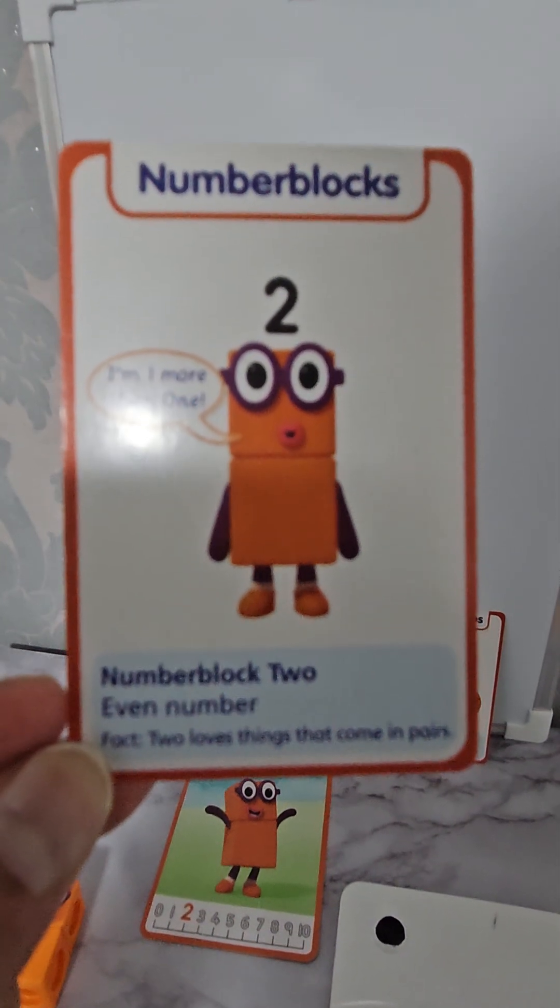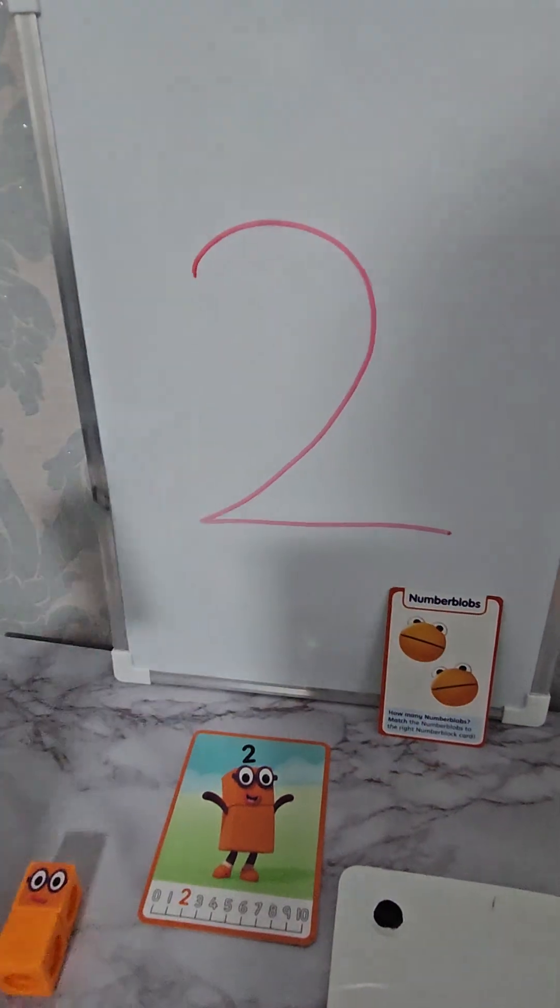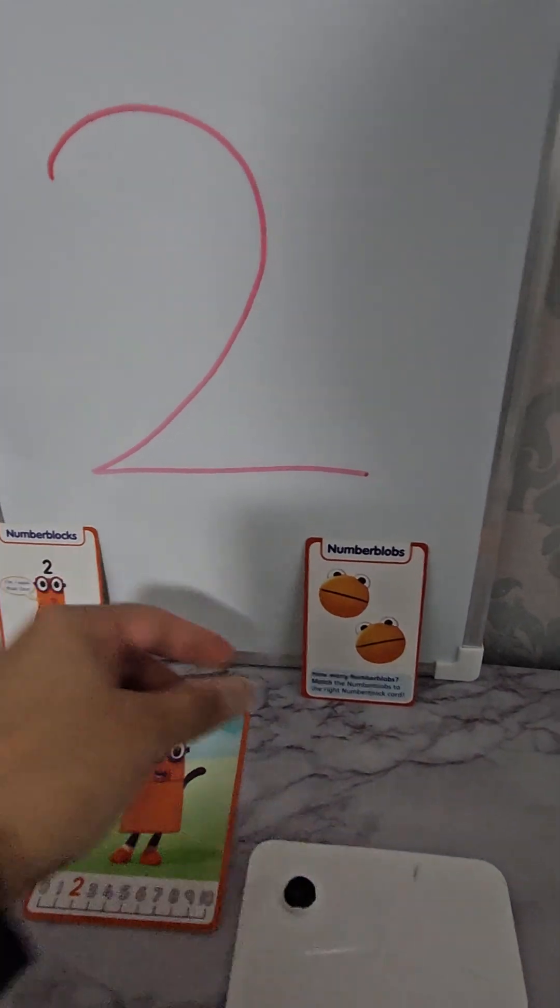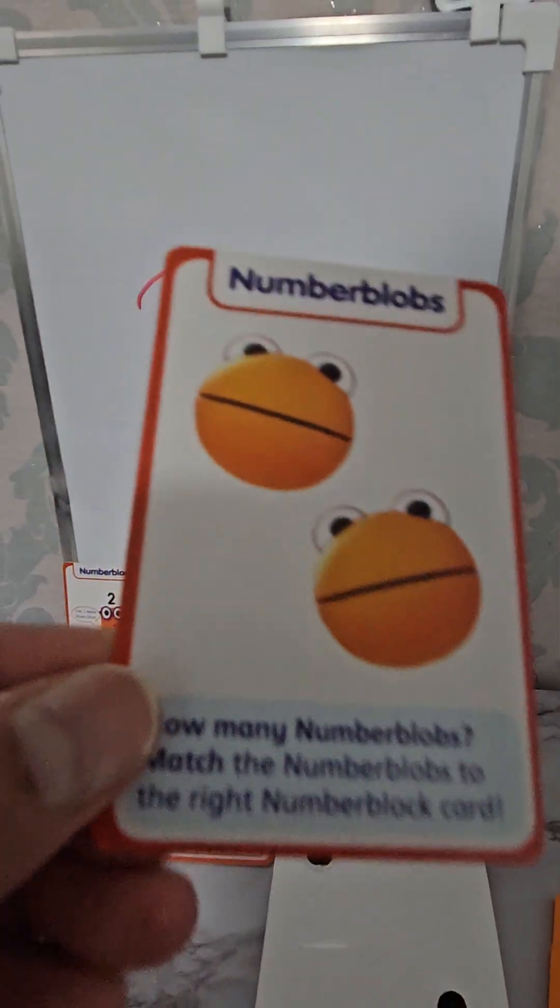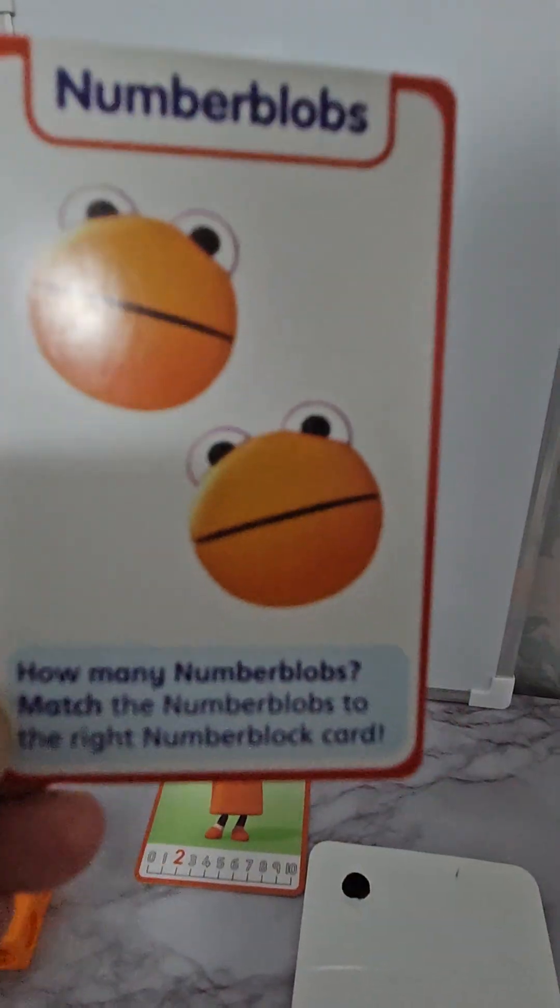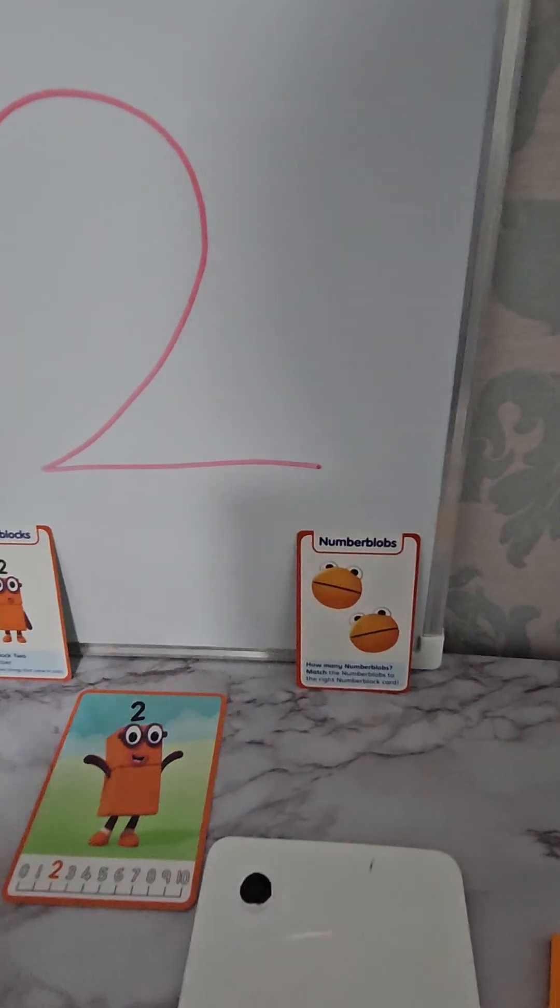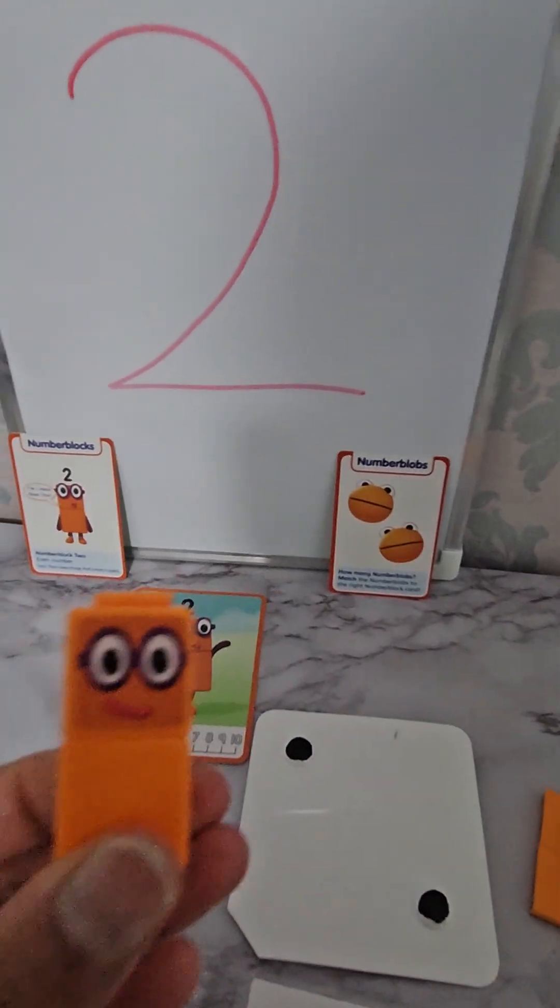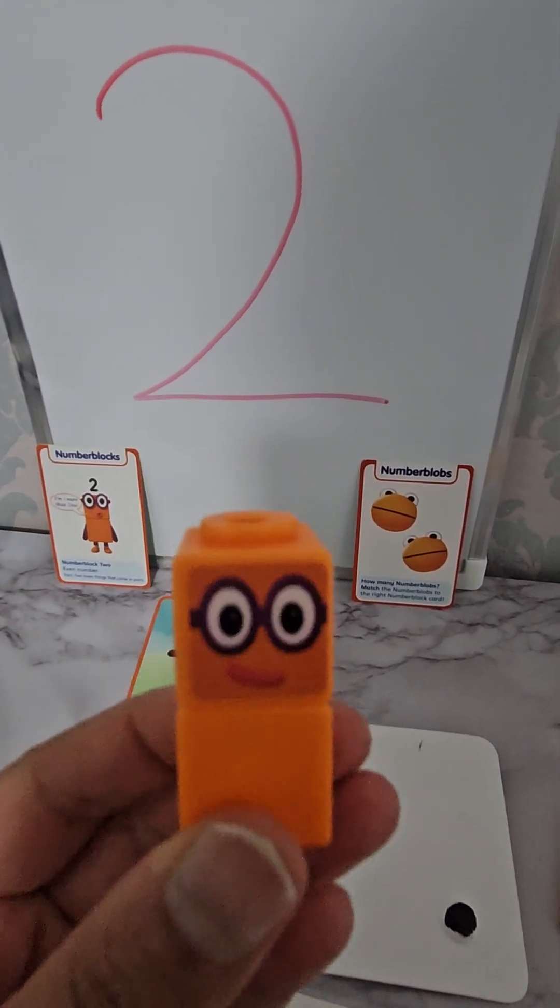Two loves things that come in pairs. Everything that comes in pairs is number 2. This is a pair. A pair of number blobs. This is two number blocks.